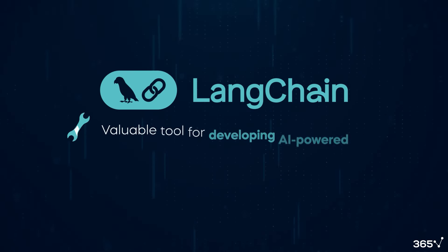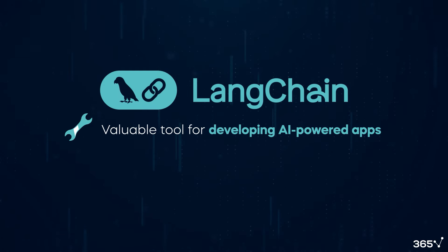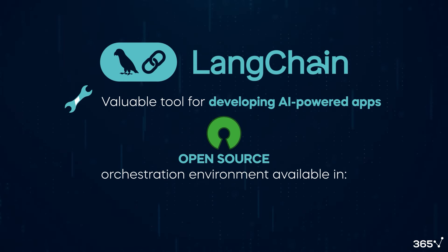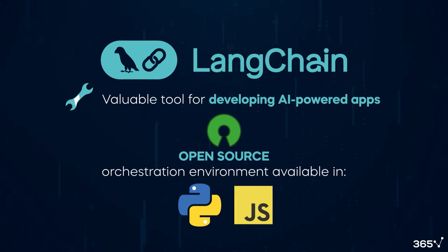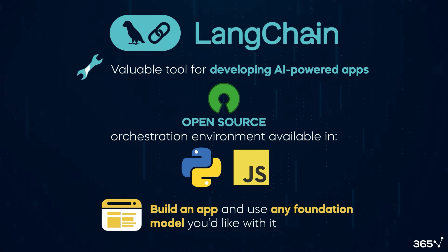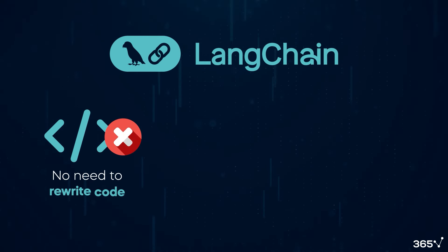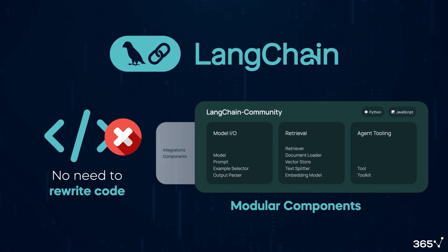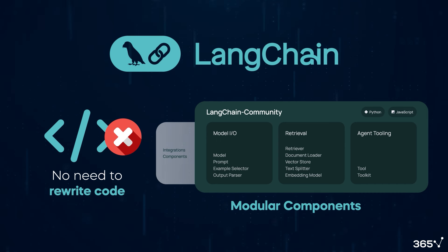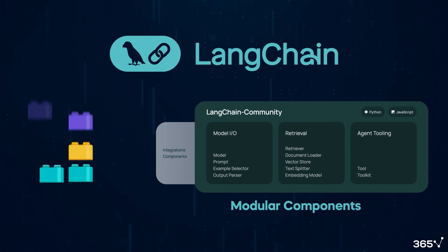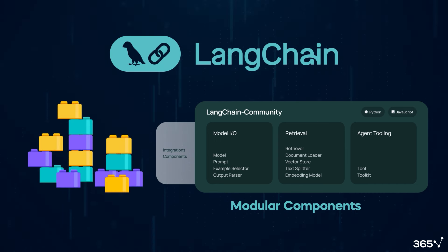LangChain, a valuable tool for developing AI-powered apps, is an open-source orchestration environment available in Python and JavaScript. It allows you to build an app and use any foundation model you'd like with it. You don't need to rewrite code, because LangChain's modular components, like functions and object classes, can replace one foundation model with another in a structured, easy-to-implement way. Much like constructing with Lego building blocks, you can easily replace one piece with another and continue building forward without any issues.